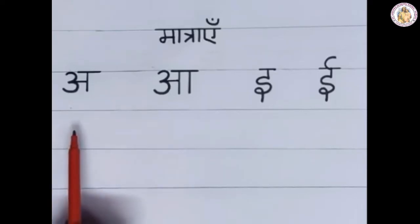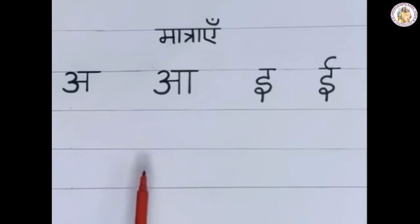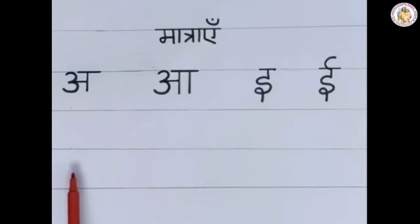This is 'a'. We are not using any symbol for 'a'. We have to add this Matrayani with the consonants. Each consonant has a sound, so 'a' does not change the consonant's sound. There is no Matra for 'a'.